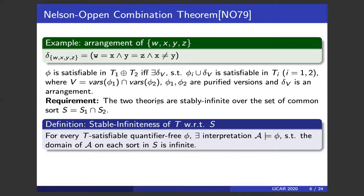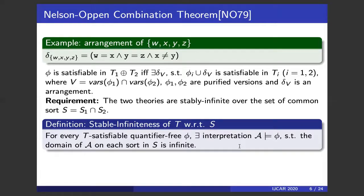Stable infiniteness of theory T with respect to S means: for every T-satisfiable quantifier-free formula φ, there exists a satisfying interpretation A such that the domain of A on each sort in S is infinite. For example, the theory of integers is stably infinite since its domain is infinite. But bit vectors are not stably infinite — an 8-bit vector has domain of size 2^8, which is finite. So the Nelson-Oppen theorem cannot handle theory combination over bit vectors and another theory.